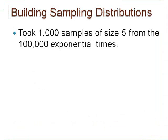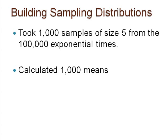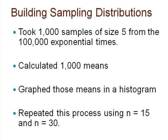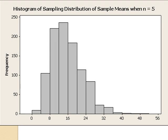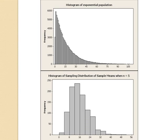What if I built a few sampling distributions from this non-normal population just like we did for the weights of bags of pretzels? I took 1,000 samples of size 5 from my population of 100,000 exponential times, calculated 1,000 means, and graphed those means in a histogram. Then I repeated this process and changed the sample size from 5 to 15 to 30. The sampling distribution shape is less skewed than the population shape, and the sampling distribution histogram is less spread out.